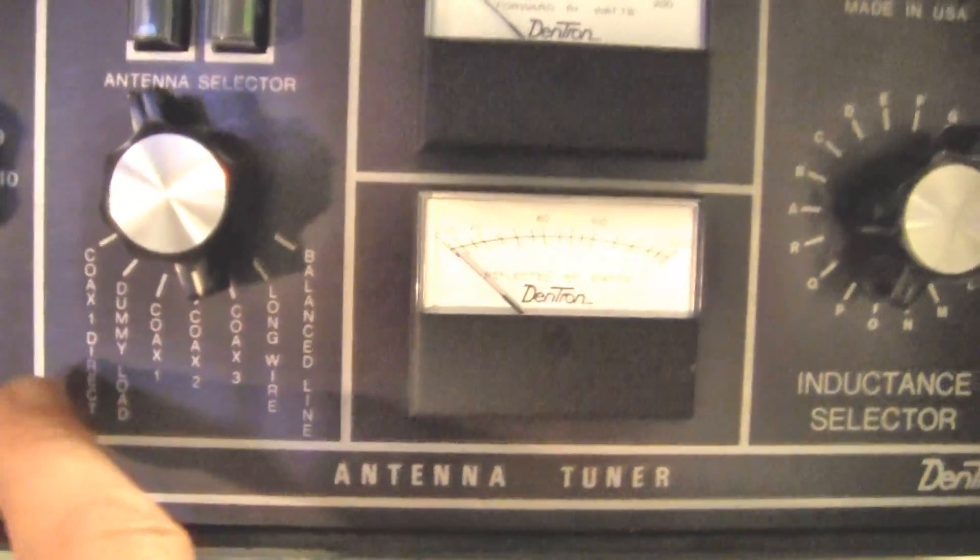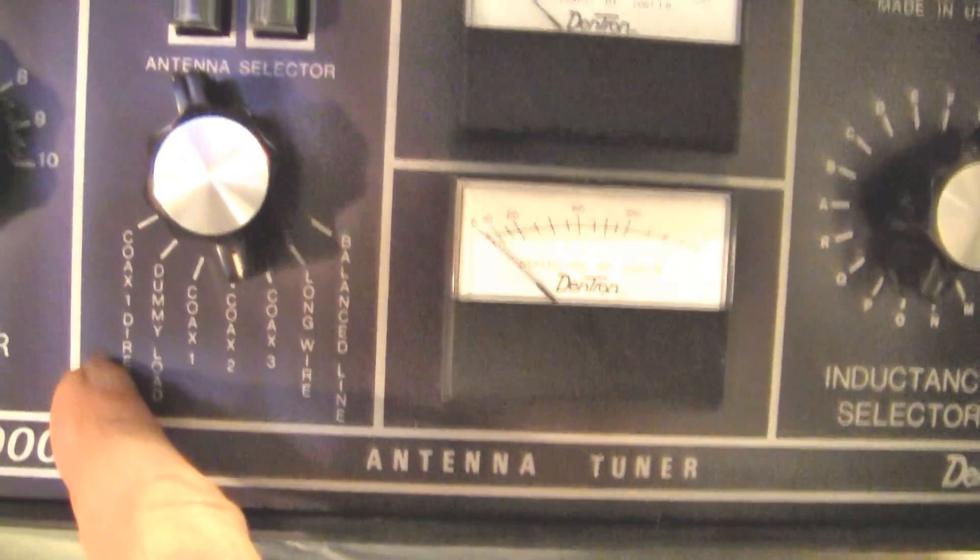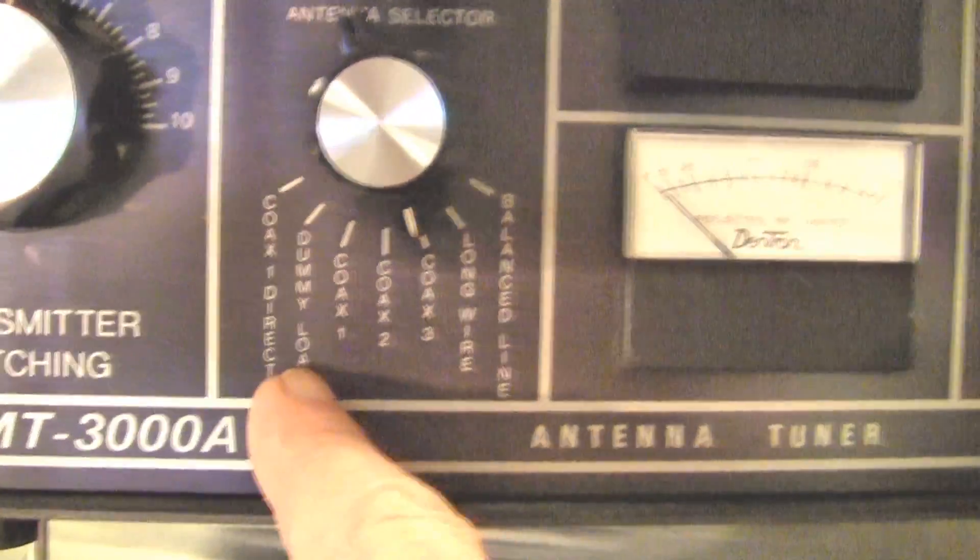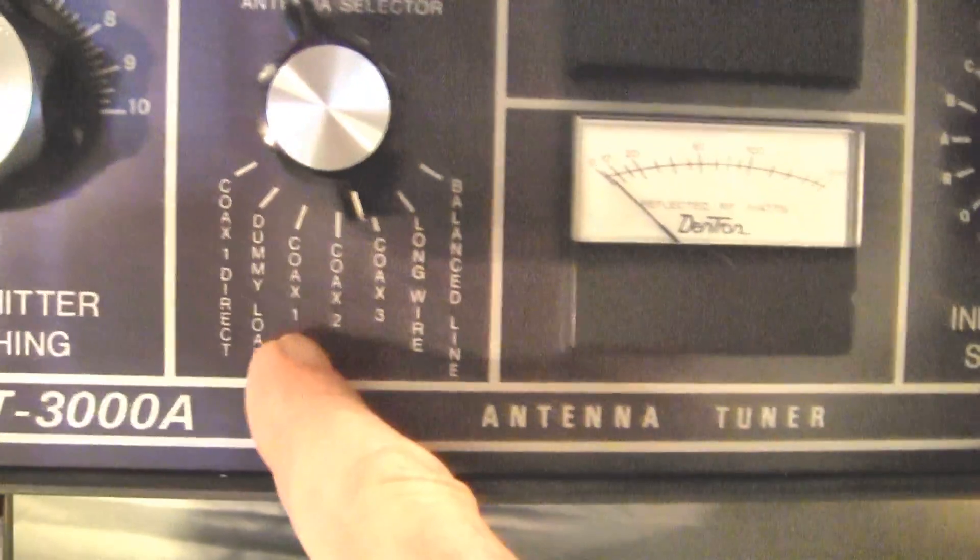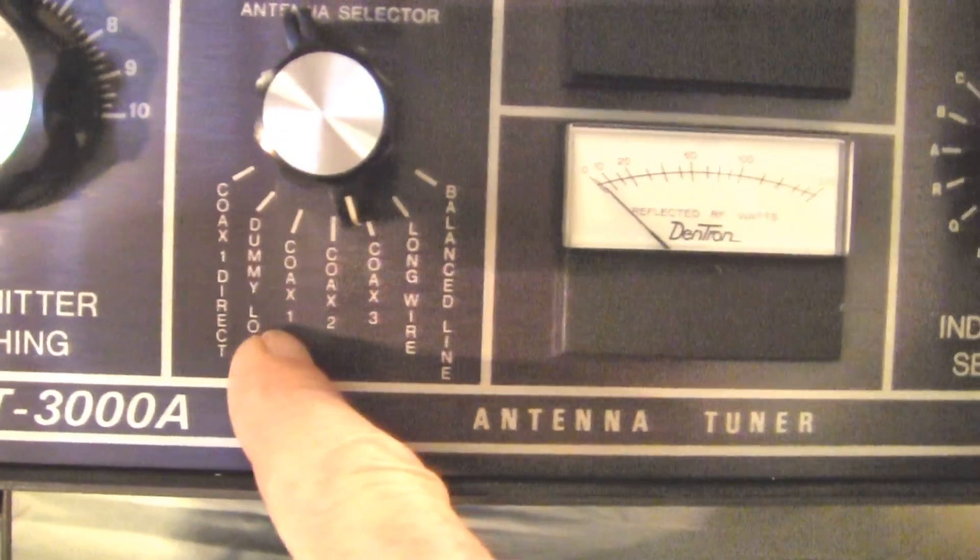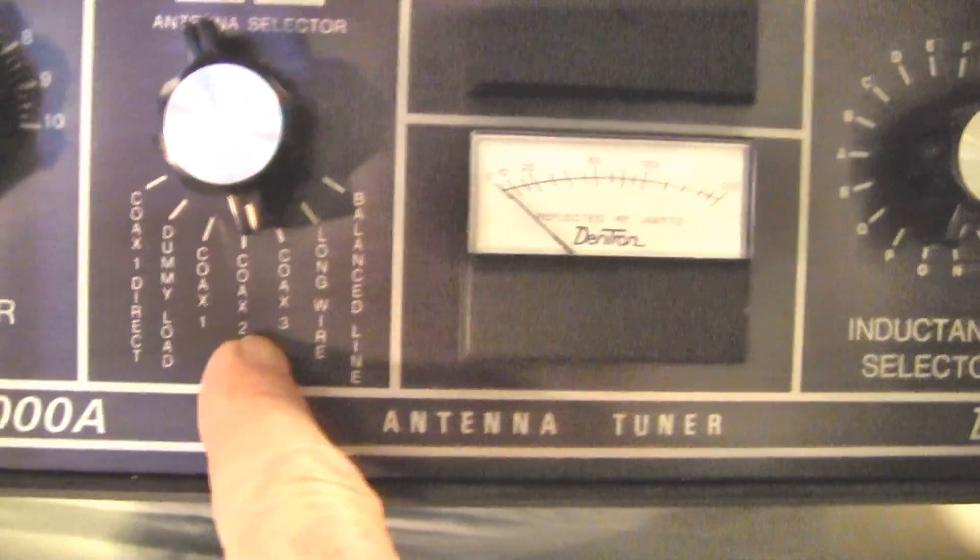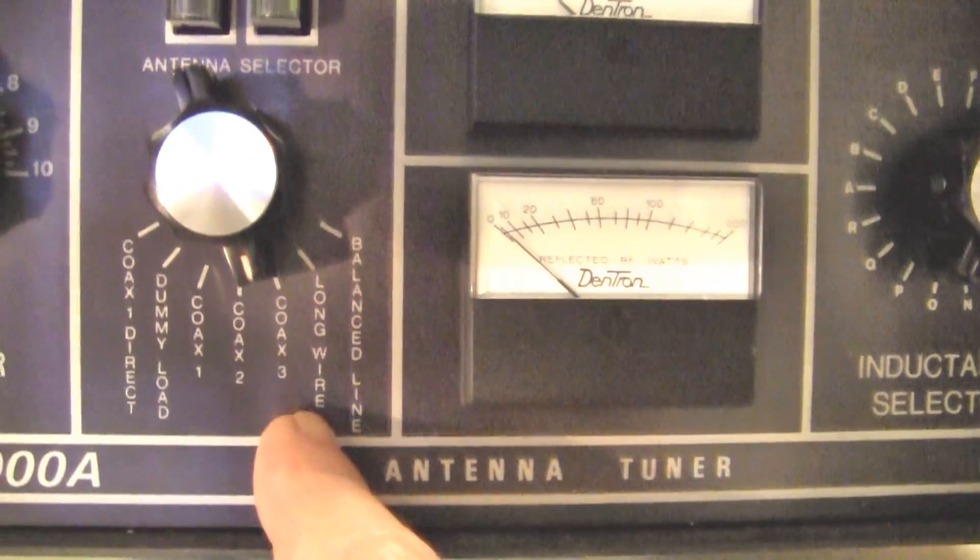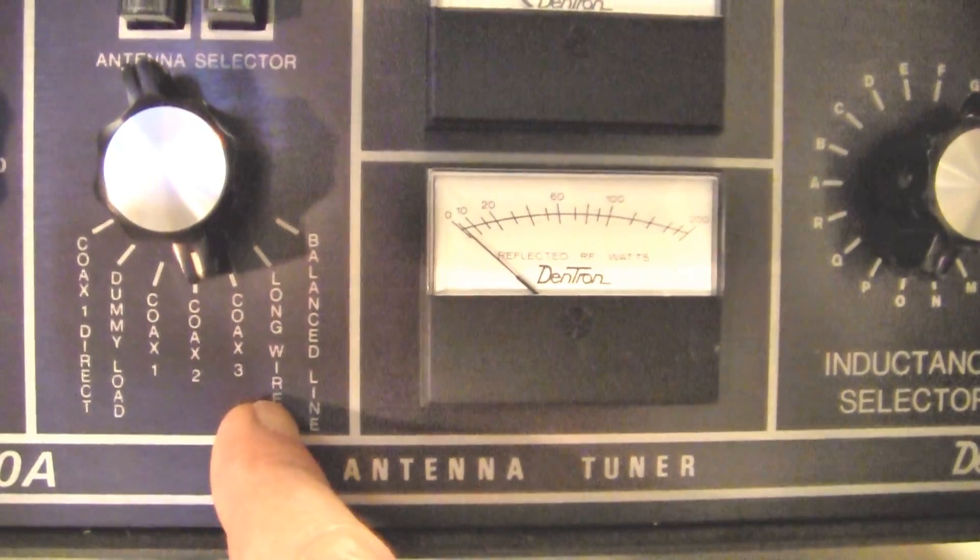Basically down here we can connect coax 1 direct to an antenna. We can connect to an internal dummy load. There are three coax connections which can connect to antennas. We can connect the tuner to coax 1, 2, or 3. Then we can connect to a long wire. There's a balun built in so we can connect directly to a long wire.